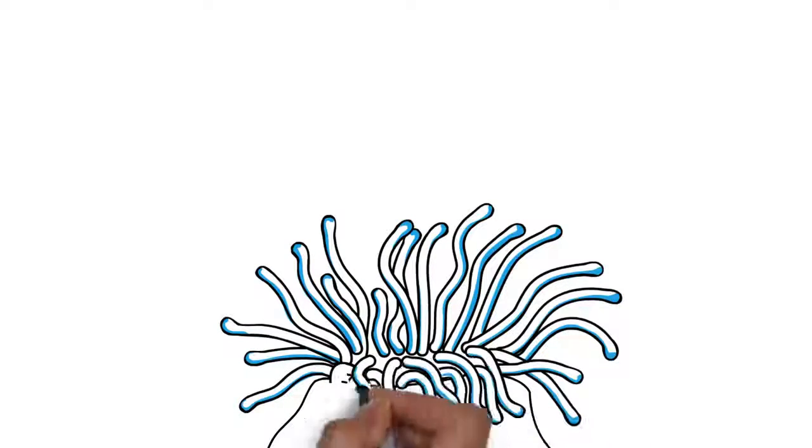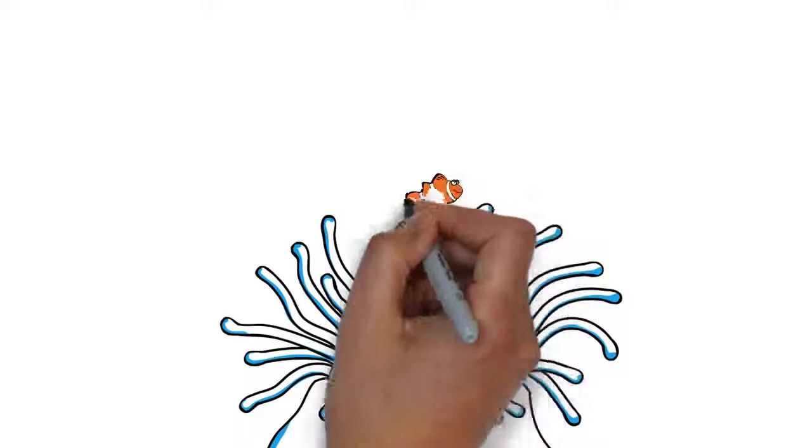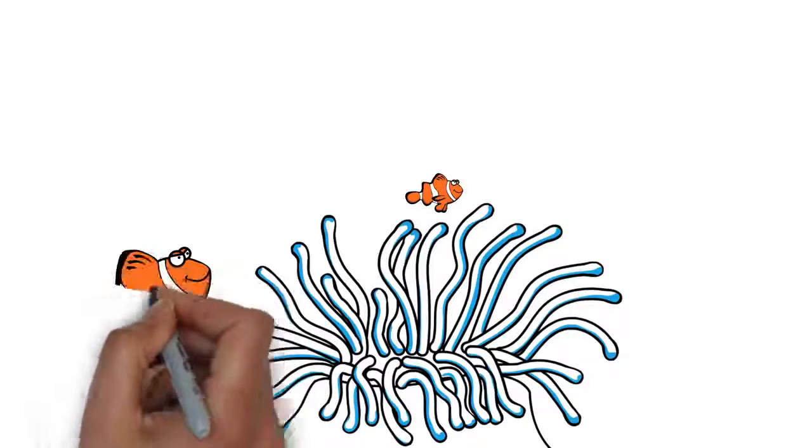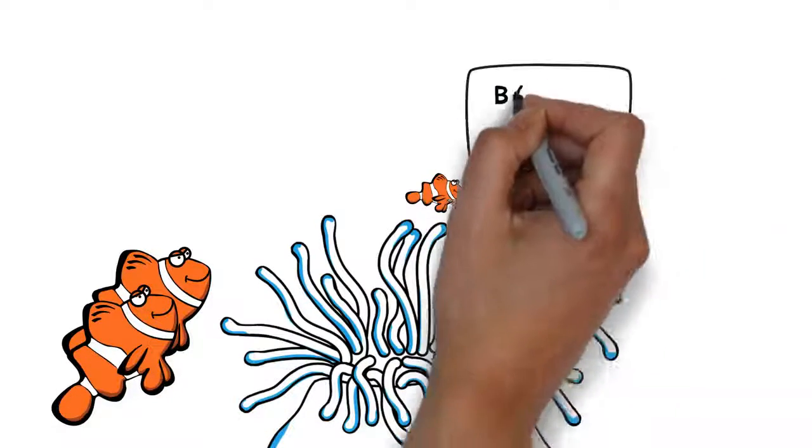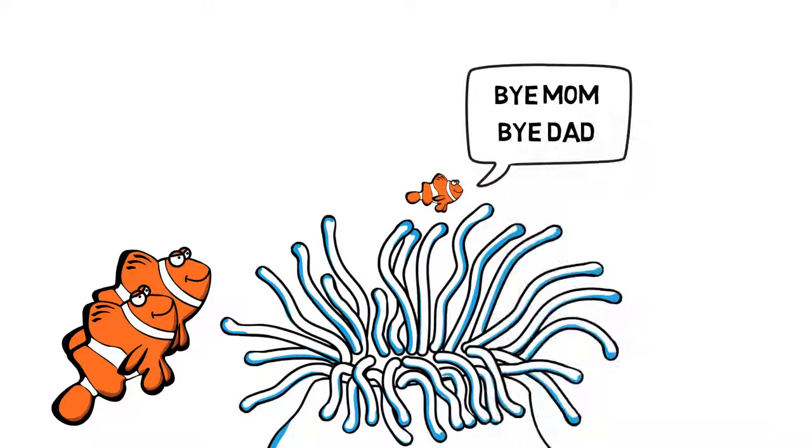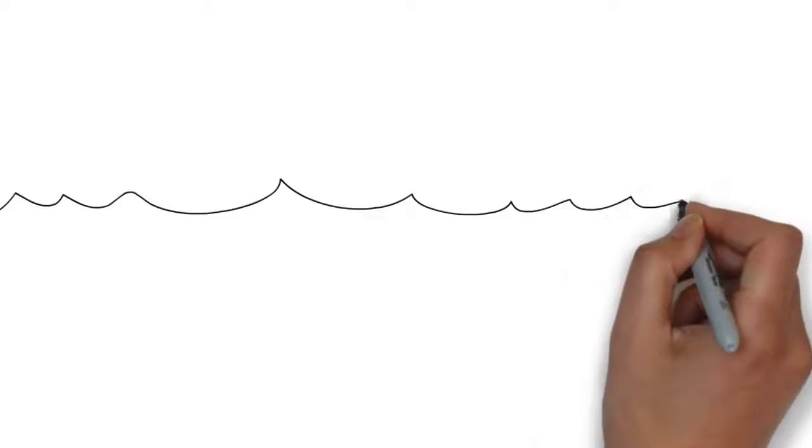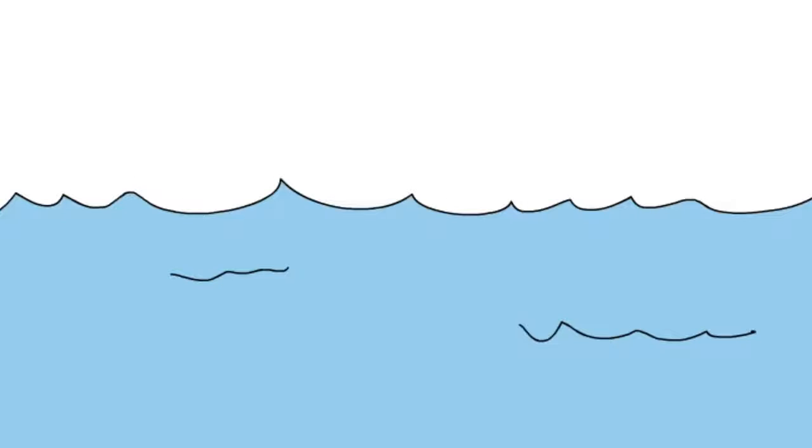Soon after hatching, baby Nemo says goodbye to mom and dad and swims towards the open ocean. Nemo at this stage is smaller than a rice grain but does not lack courage and strength. In the following few weeks, pushed by the currents, Nemo will travel long distances in the open ocean just like in the movie.